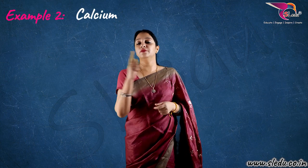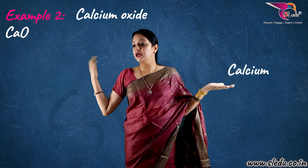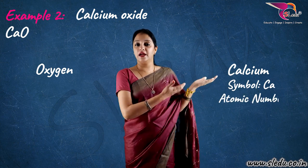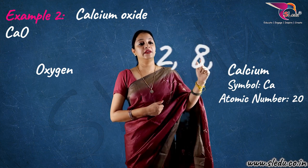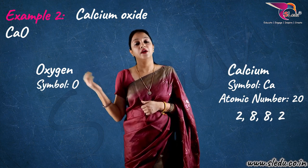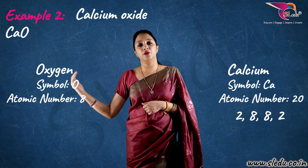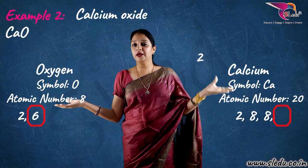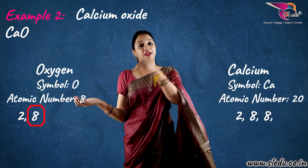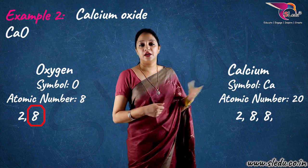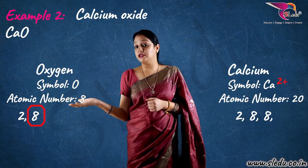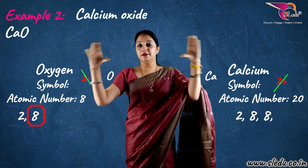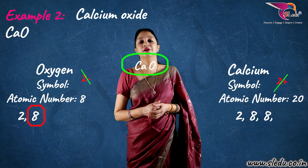I'll take the second example of calcium oxide, CaO. As you can see, I'm taking calcium on this side and oxygen on my other side. Calcium symbol is Ca, atomic number is 20, so its electronic configuration is 2, 8, 8, 2. On the other hand, oxygen, symbol O, with atomic number 8, so its electronic configuration is 2, 6. As you can see, calcium has two extra electrons in its last shell, and oxygen has two electrons less, so calcium gives its two electrons to oxygen. Calcium gets 2 positive charge, and oxygen, because it took two electrons, gets 2 negative charge. This 2 positive cancels out with 2 negative, and ultimately they form CaO, calcium oxide. So, this is how ionic bonds are formed.